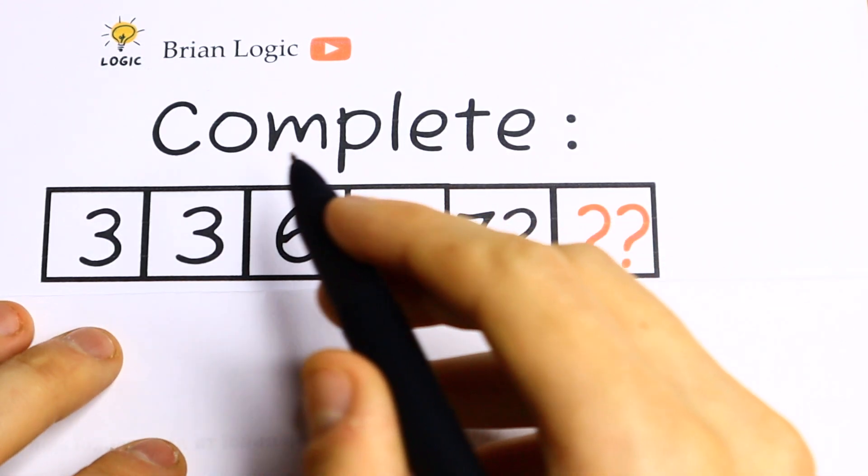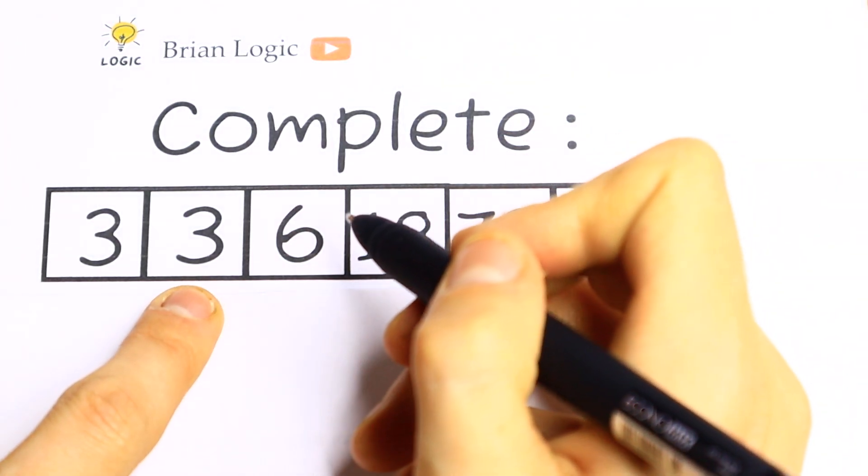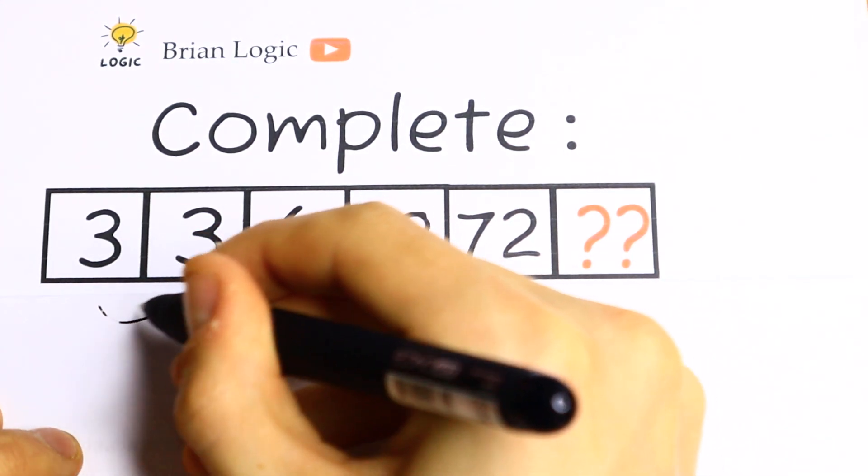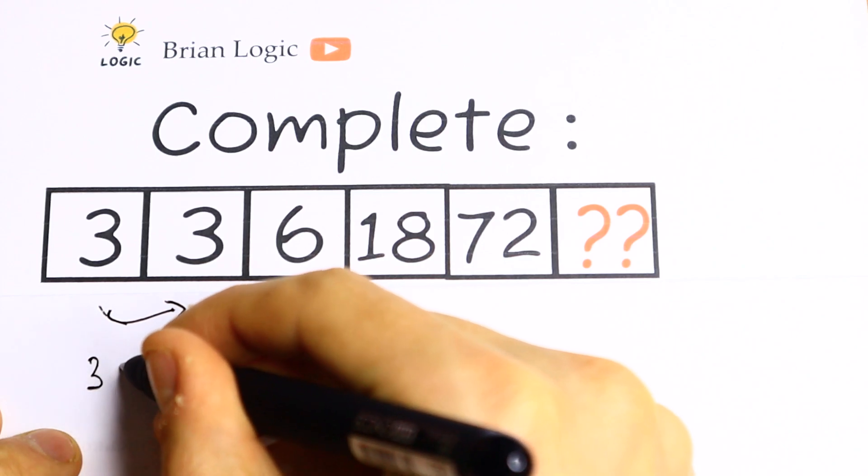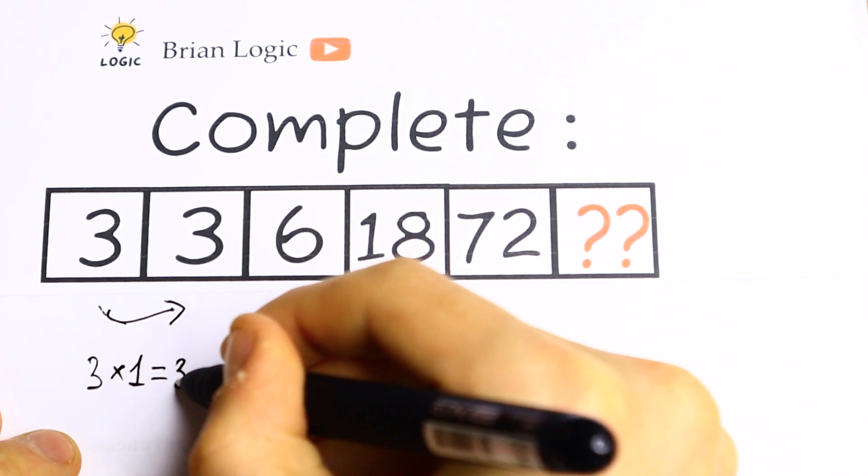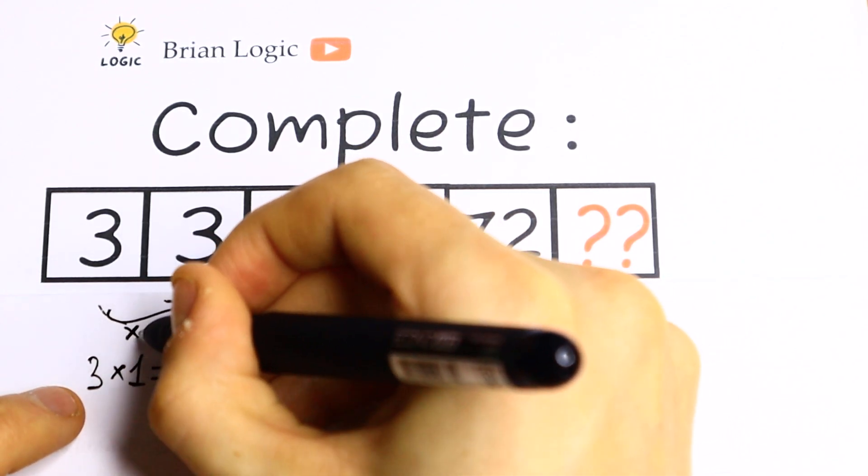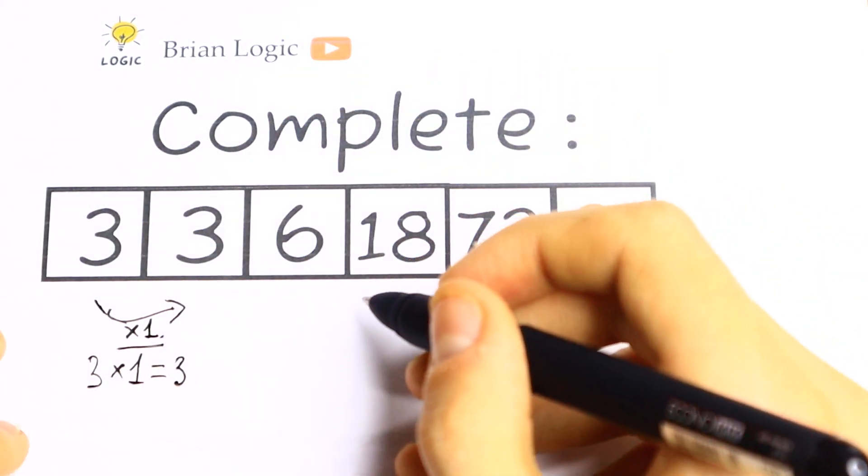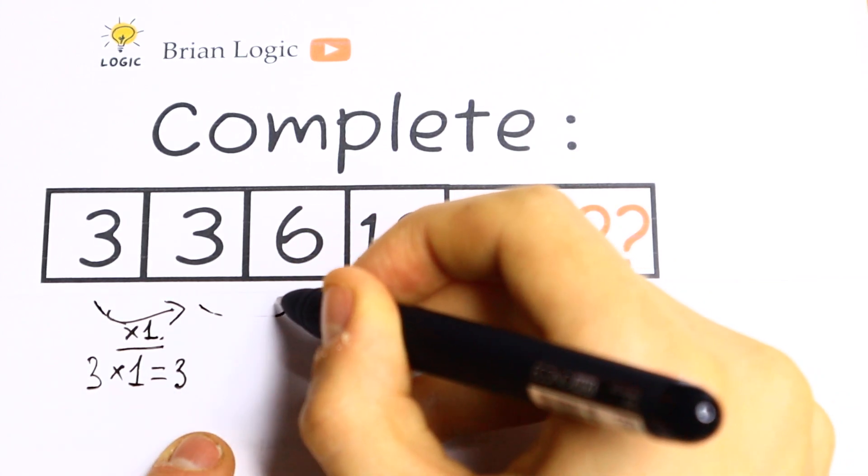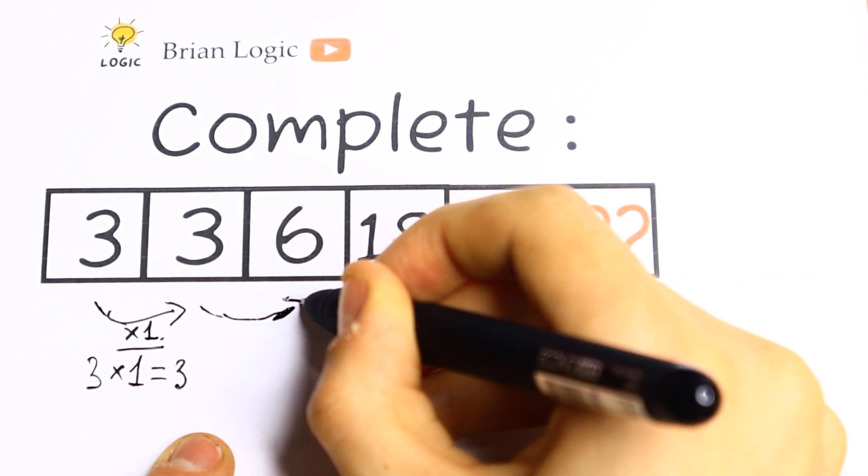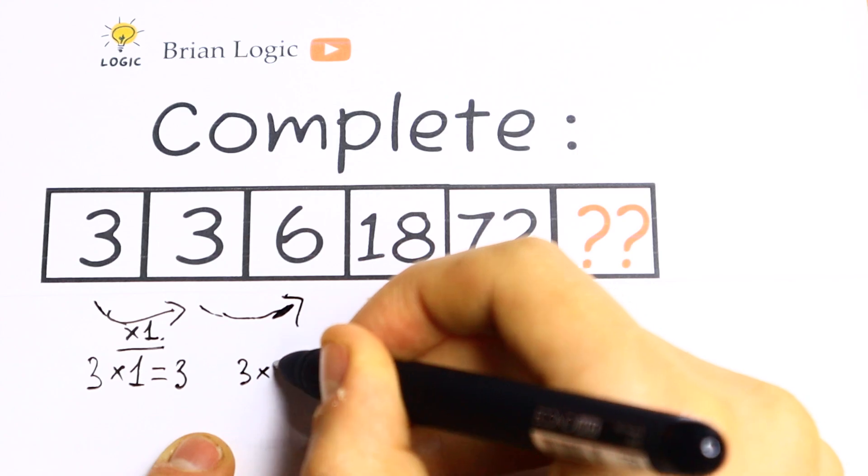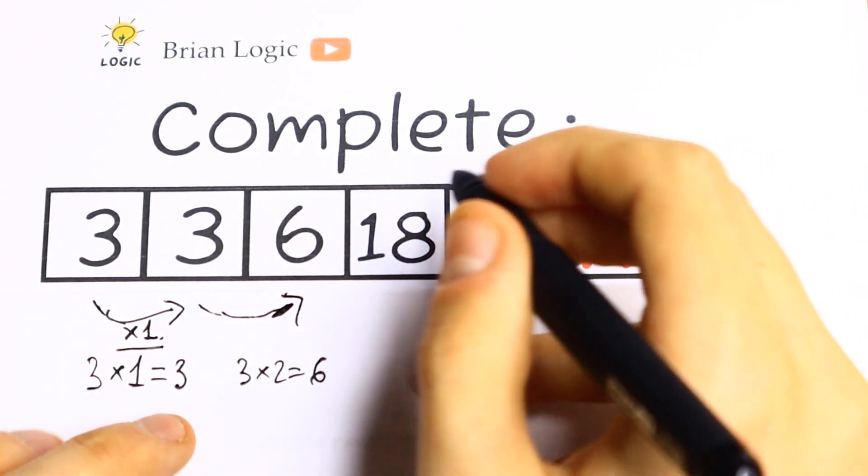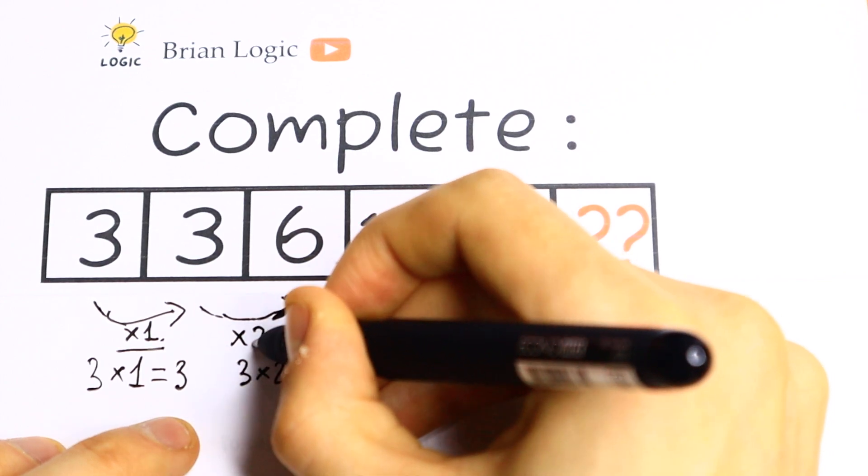Take a look. I can see that we can multiply this 3 by 1 to get the next 3, because 3 times 1 equals 3. So here we multiply by 1. Let's check this pattern. We need to multiply 3 by 2. So 3 times 2 equals 6. The second number we're multiplying by 2.